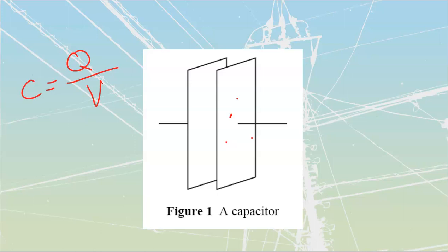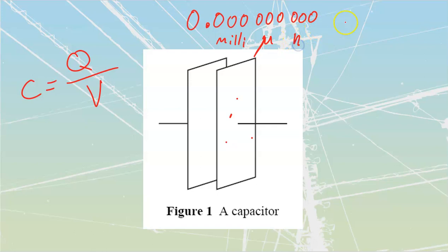Capacitors are rated in Farads, which is a really large unit of capacitance. Usually we're going to see values well below that — going into the milli, then micro (that funny-looking µ), then nano, and then pico range. Most of our small caps are going to be inside that nano-to-pico range. We do have some large ones up in the milli-Farads, but those are ridiculously large capacitors.